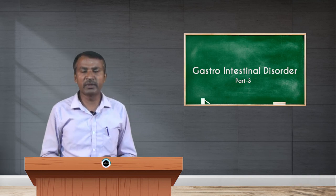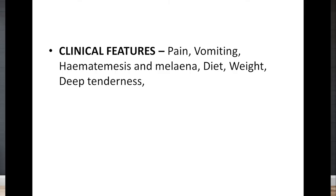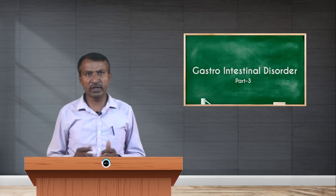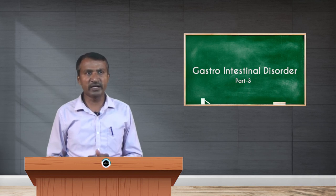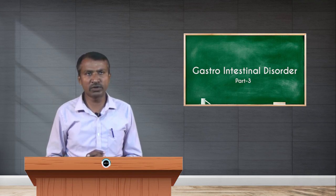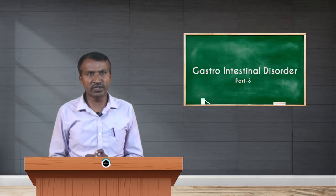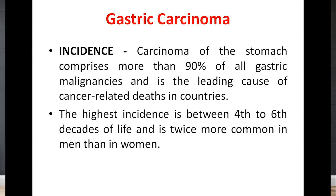Clinical features mainly include pain, vomiting, hematemesis, melena, dietary considerations, weight loss, and deep tenderness. Correction of diet is very important. On palpation of the abdomen, there will be deep tenderness. When we look at the histological picture under microscopy, we can see the layers: intact mucosa, granulation tissue zone, necrotic zone, ulcerated mucosa where the tissue layer is totally deranged, zone of cicatrization, and the superficial exudative zone.